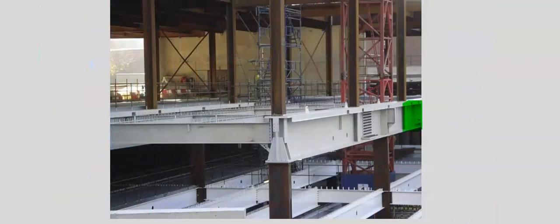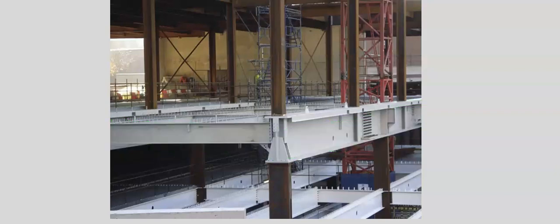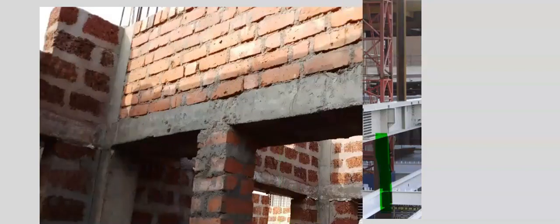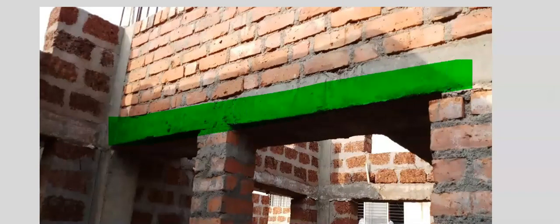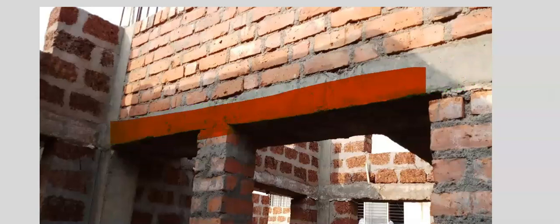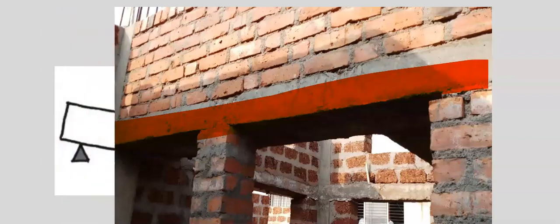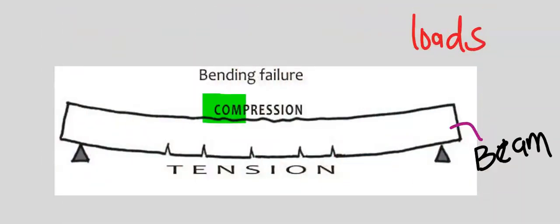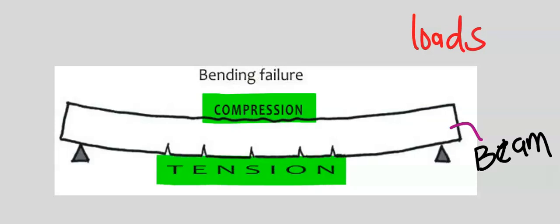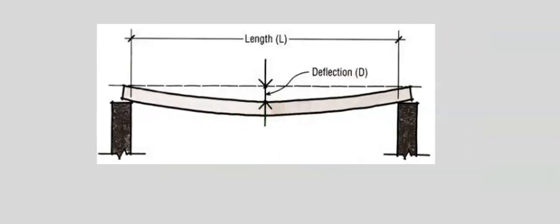At times beams carry the loads of columns, which are then transferred to other columns. Beams can also carry walls, and beams also have their own self-weight. Due to these loads, beams experience compression and tension, and these loads can cause a beam to experience deflection.